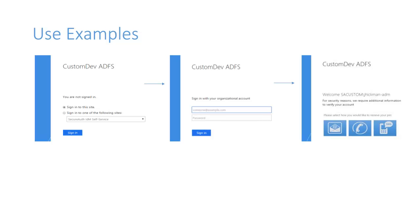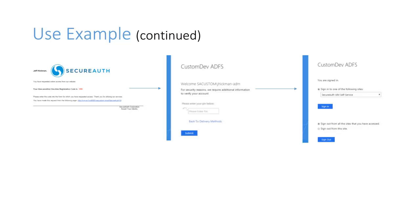In this example, the .NET client signs in using a username and password, followed by a SecureAuth request for additional information. IDP then requests a one-time code and asks for additional information — in this case a PIN code — and selection of a specific site before allowing access to the program or application.